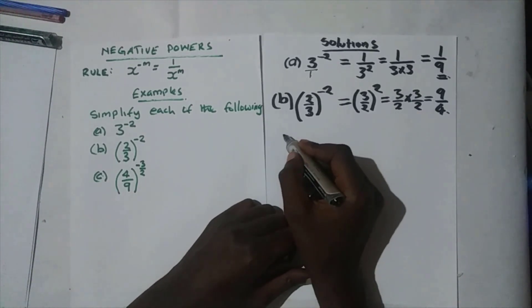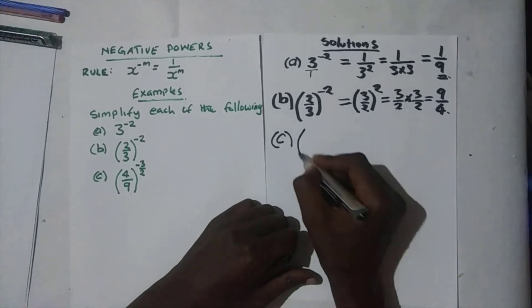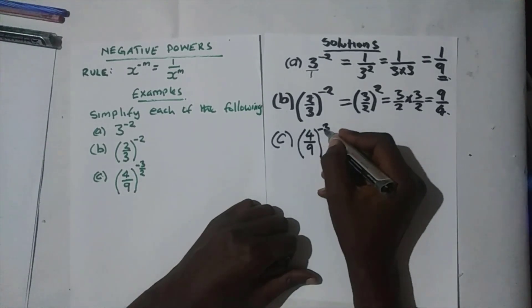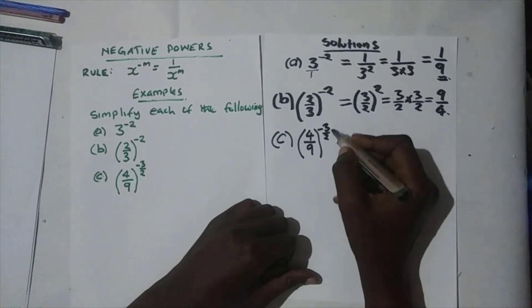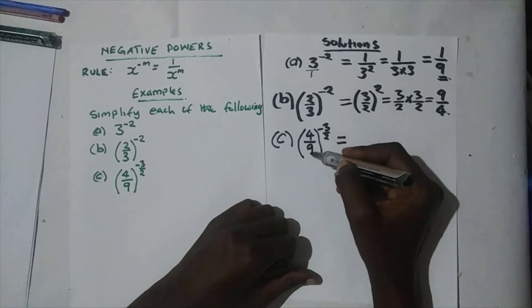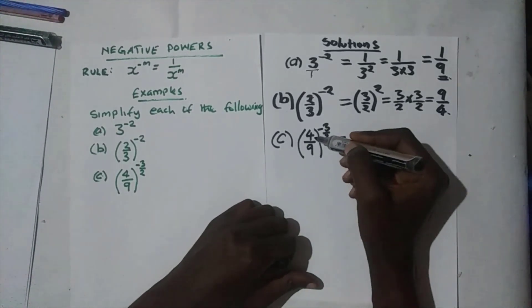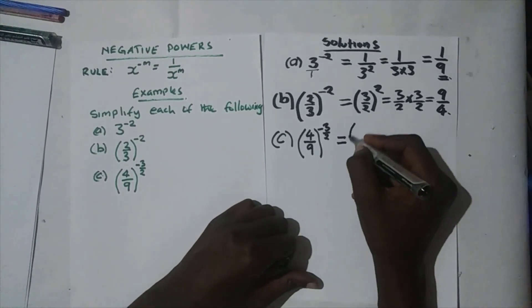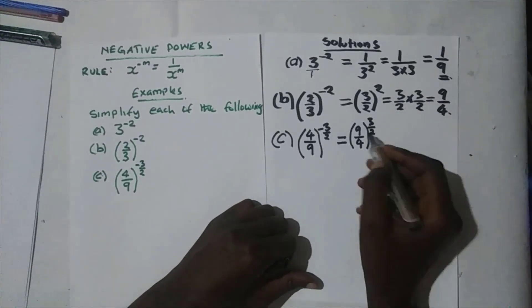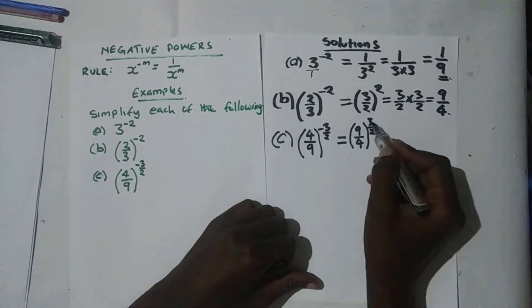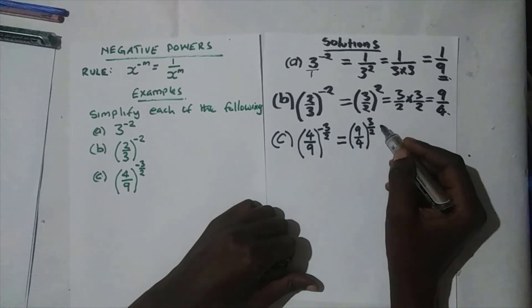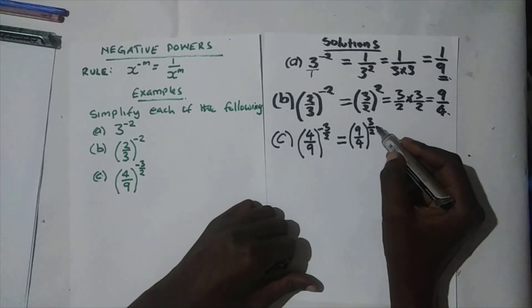In the third example we have four over nine to the power negative three over two. The first step is always to change the power to a positive. We swap the numbers in the brackets — the denominator and numerator are interchanged — so we get nine over four to the power three over two. The power has become positive.